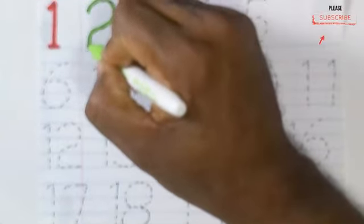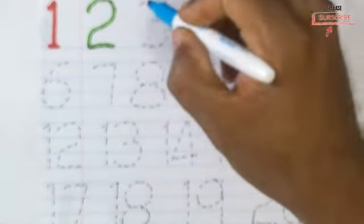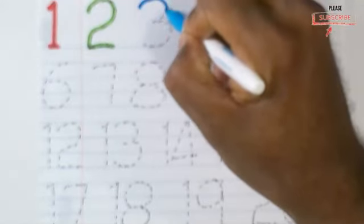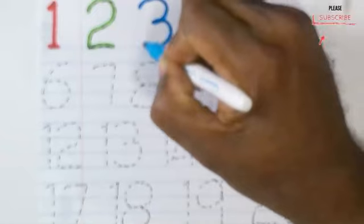Let's learn numbers and count numbers. The number one — that's the number one. Number two, you're learning how to write numbers, that's the number two. Let's now write the number three, that's the number three.